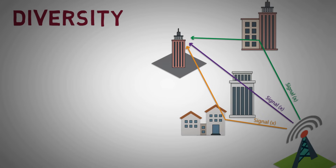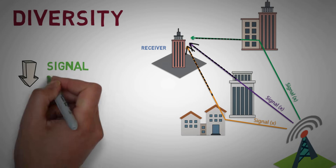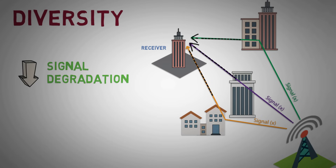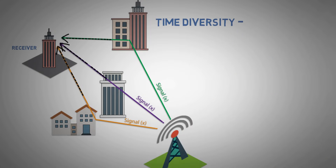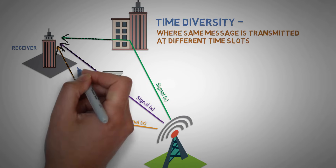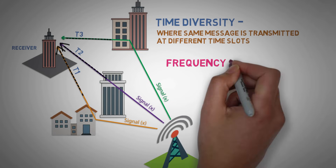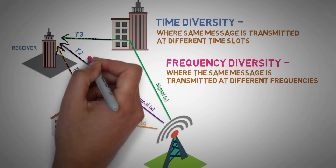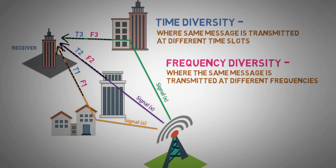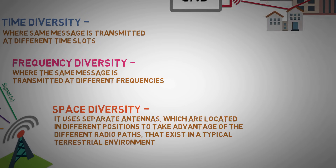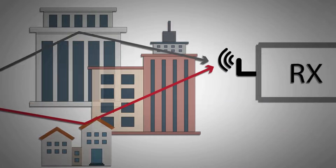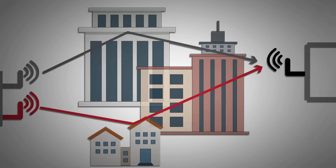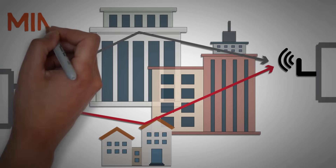The principle of diversity is to provide the receiver with multiple versions of the same signal, which reduces signal degradation considerably and effectively improves the link performance. This can be done by time diversity, where the same message is transmitted at different time slots; frequency diversity, where the same message is transmitted at different frequencies; and space diversity, which uses separate antennas located in different positions to take advantage of the different radio paths that exist in a typical terrestrial environment. This concept is used in MIMO.